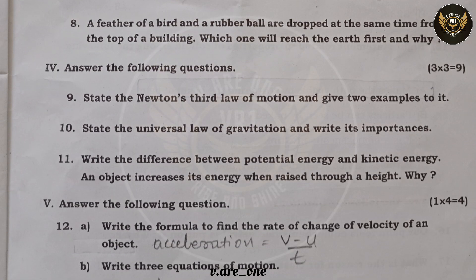Question eight: a feather and a rubber ball are dropped at the same time from the top of a building — which one will reach the earth first and why? Both will hit the ground at the same time because, in the absence of viscosity, both the rubber ball and the feather experience the same acceleration due to gravity.